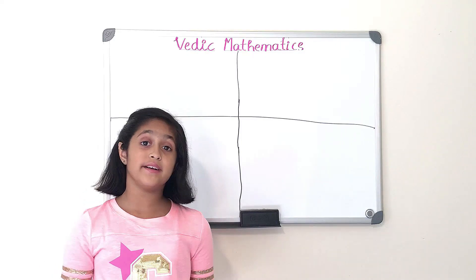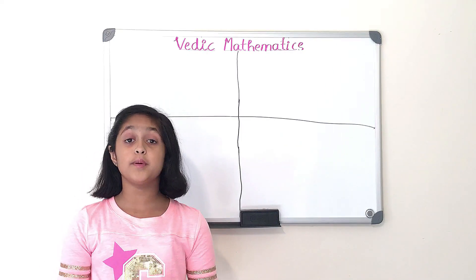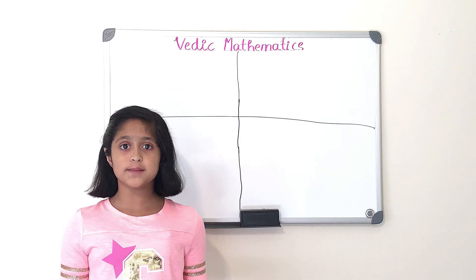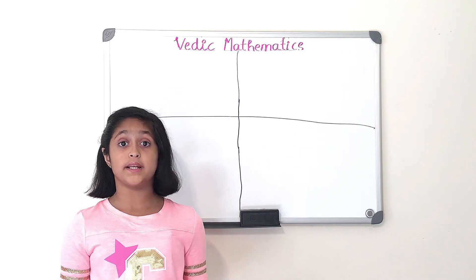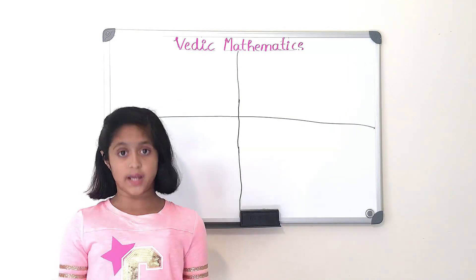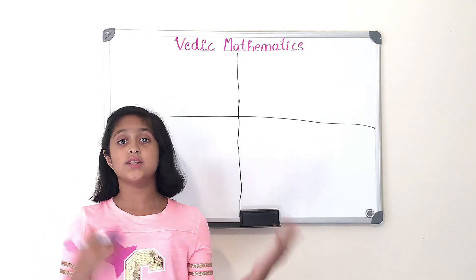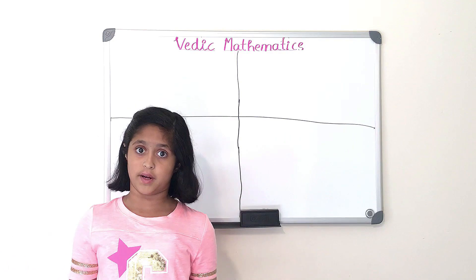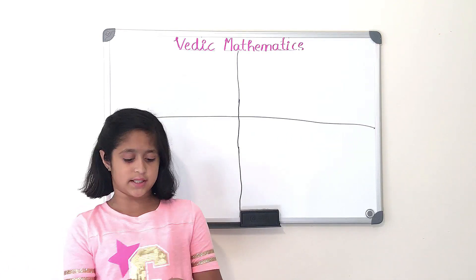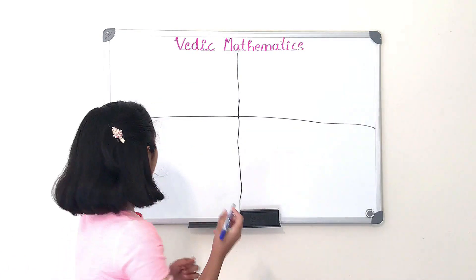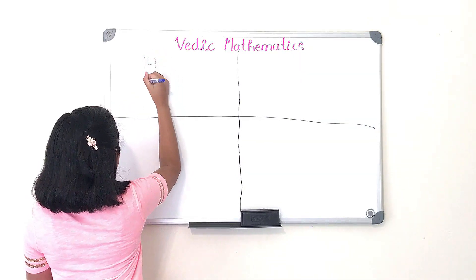Welcome back on NP Station. As I said, today we'll be learning how to do the base method. This method is for multiplying numbers near the powers of 10, such as 10, 100, 1000, 10,000, and so on. Let's start off with an easy one — how about 14 times 12?